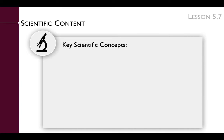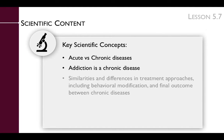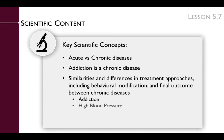To prepare for this lesson, you'll need to review the key scientific concepts that will be presented in it. They include acute versus chronic diseases, addiction as a chronic disease, and similarities and differences in treatment approaches, including behavioral modification and the final outcome between chronic diseases. The chronic diseases included in this lesson are addiction, high blood pressure, and diabetes.